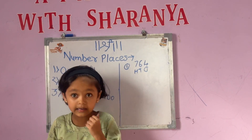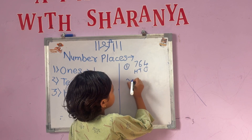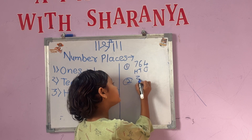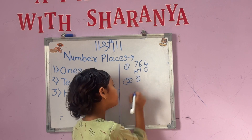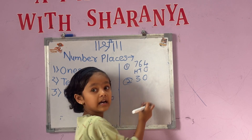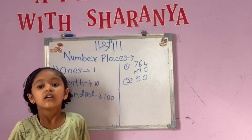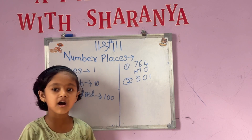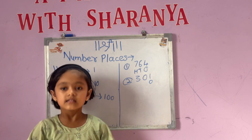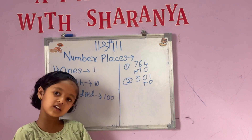Now take the second example. The second example is 3, 0, and 1. In that, the 1st place is 1, the 10th place is 0, and the 100th place is 3.